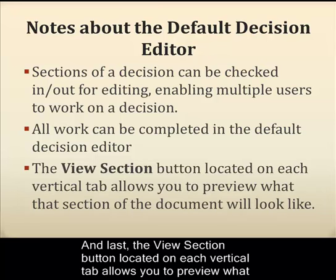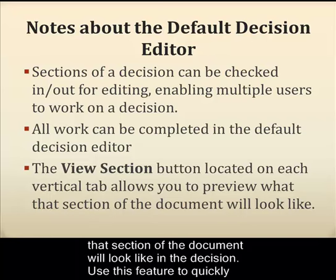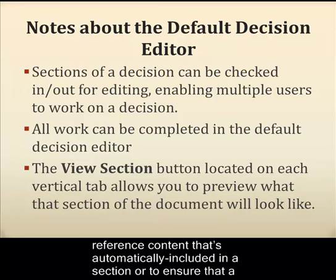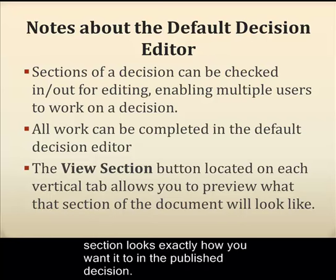And last, the View Section button is located on each vertical tab, and clicking this allows you to preview what that section of the document will look like in the decision. Use this feature to quickly reference content that's automatically included in a section, or to ensure that a section looks exactly how you want it to in the published decision.